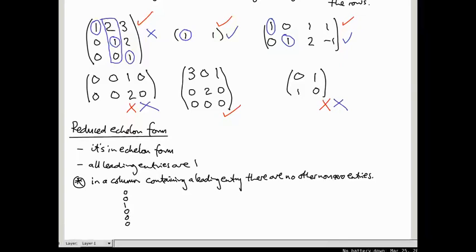And what about this one in the middle? It's in echelon form, but its leading entries are not one. It's three and two. So only these two on the top row here are in reduced echelon form.